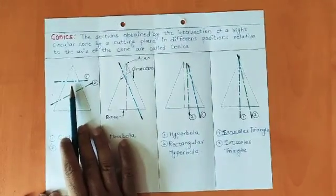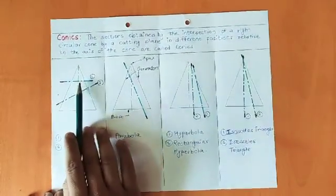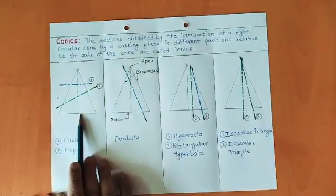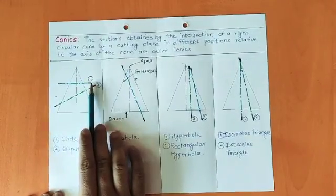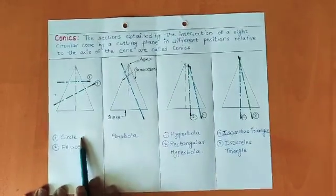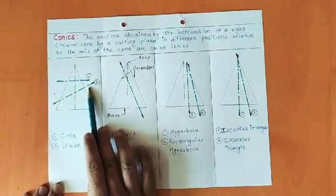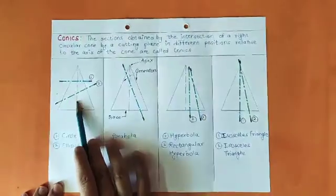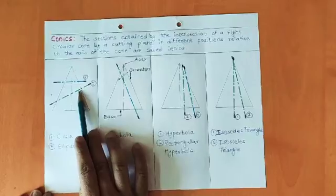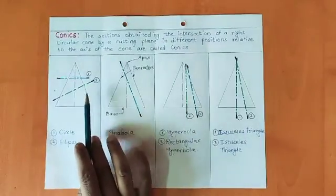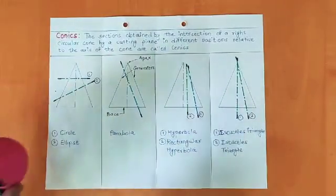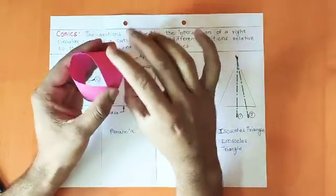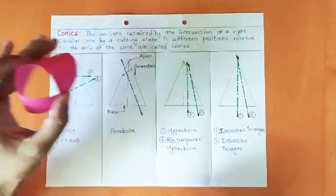In case number one, if the cutting plane is passing through the axis and generator and it is parallel to the base, then the shape we get will be a circle. Case number two: if the cutting plane is inclined to the axis of the cone and passing through both the end generators, then the shape you get is an ellipse. As you can see, the cut is inclined to the axis, giving us an ellipse.